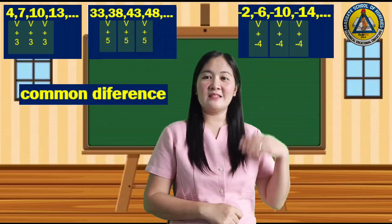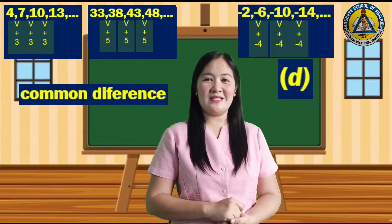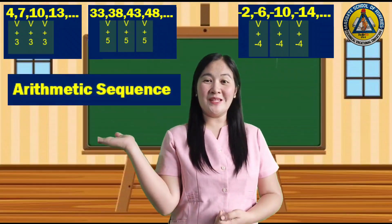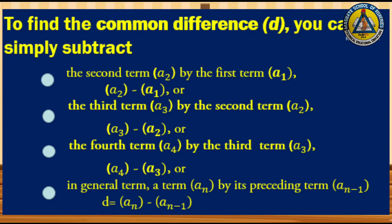The constant number being added is called the common difference, and we represent it as d. All these sequences are called arithmetic sequences. To find the common difference d, you can subtract the second term a(2) by the first term a(1), or a(3) minus a(2), or in general: d equals a(n) minus a(n-1).